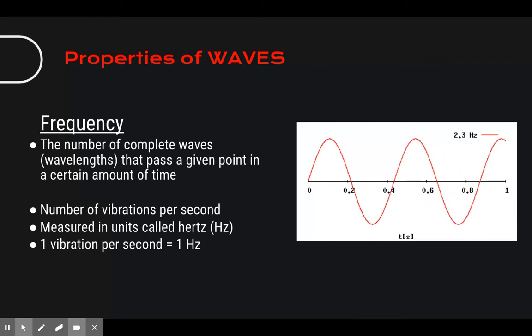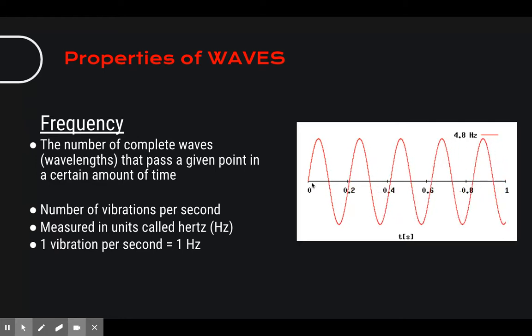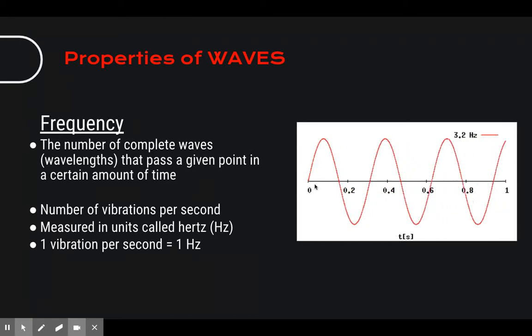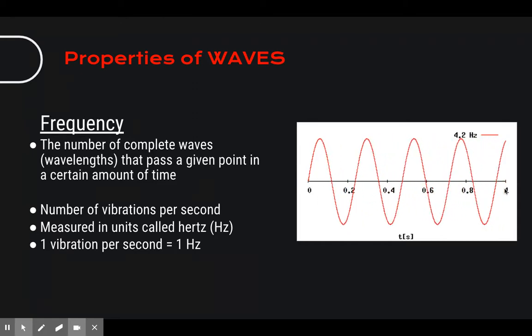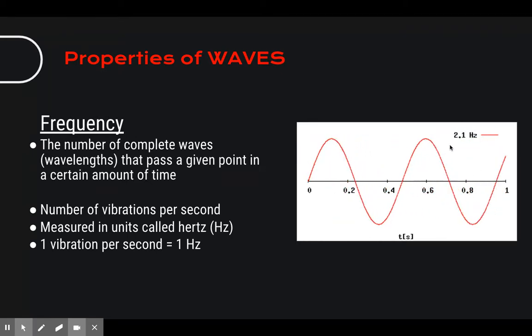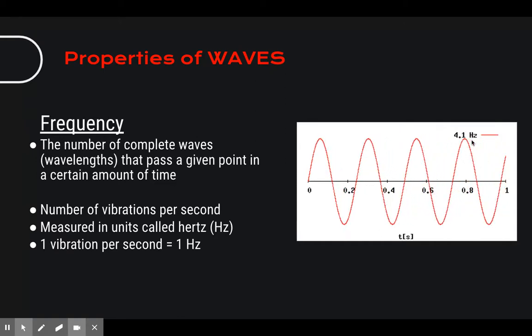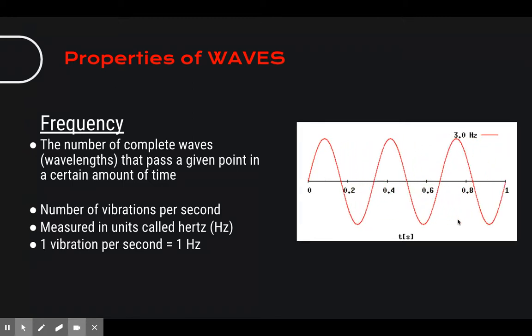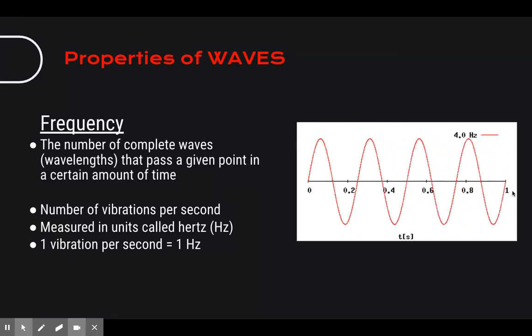Next we have frequency. Frequency is the number of complete wavelengths that pass a given point in a certain amount of time. So you can see on the GIF here that there's increasing frequency. This line here shows one second. And as there's more waves, the frequency, which is right here, measured in this unit called hertz, hz, is increasing. It goes from one up to five, because there are five waves passing this in one second.